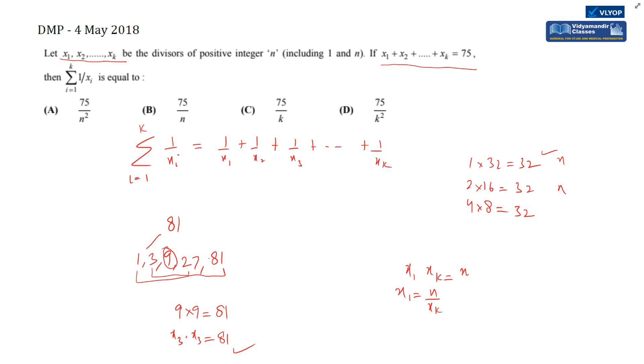Using this property that x1 × xk = n, I can replace x1 with n/xk, so 1/x1 = xk/n. Similarly, 1/x2 = xk-1/n, 1/x3 = xk-2/n, and so on, until 1/xk = x1/n.